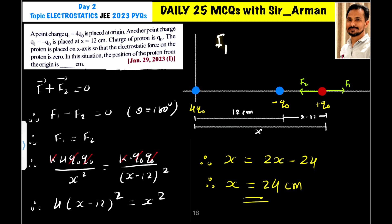F1, that is the force on this proton due to this positive charge, is k times the charge of this is 4Q0, charge of this is Q0, divided by the distance x squared. So it is k 4Q0 Q0 divided by x squared, and that equals F2.